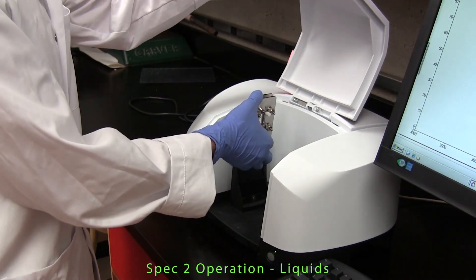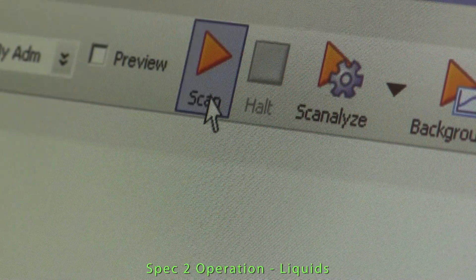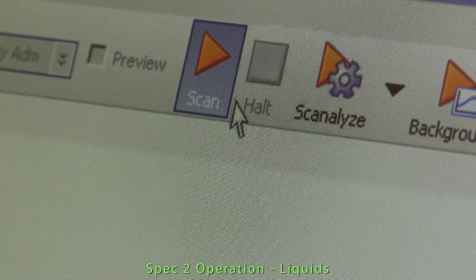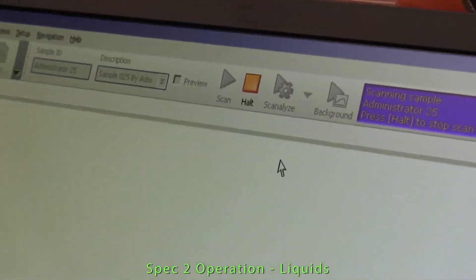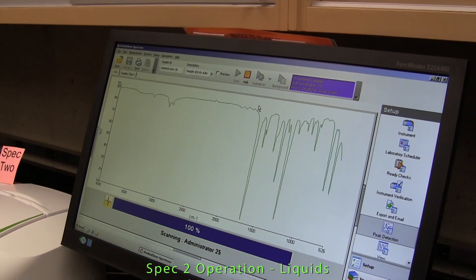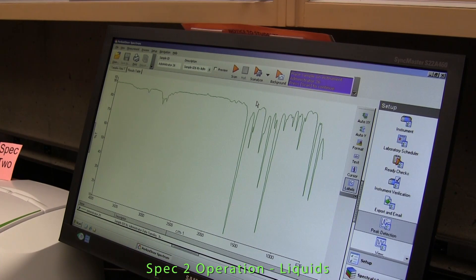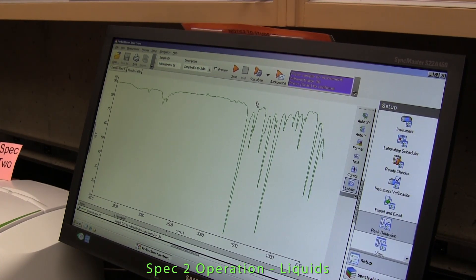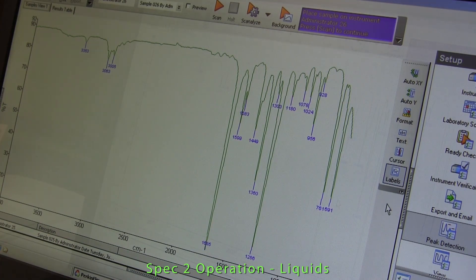The demountable cell containing the liquid sample is placed in the sample compartment. The scan icon is selected and the instrument will now collect the spectrum of the liquid sample. In a few seconds the sample's IR spectrum will appear in the graph area of the screen, and notice that the absorption peaks are not labeled to indicate the position of frequency on the scale.